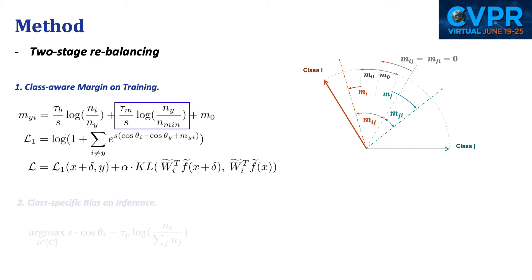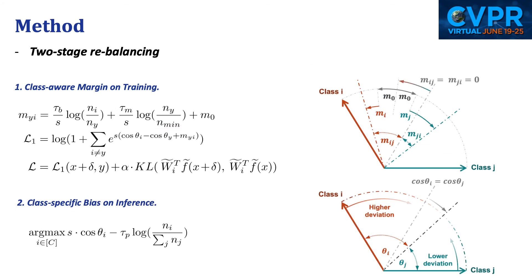Finally, we also follow previous works to integrate a KL divergence as regularization into the final loss function. At inference time, we take another step to adjust the boundary, considering the larger feature deviation for the tail classes. The rebalancing strategies applied during training and inference are complementary, and please refer to our paper for more detailed discussions.